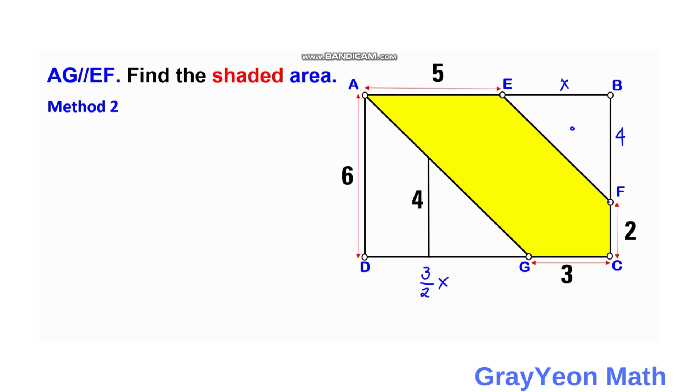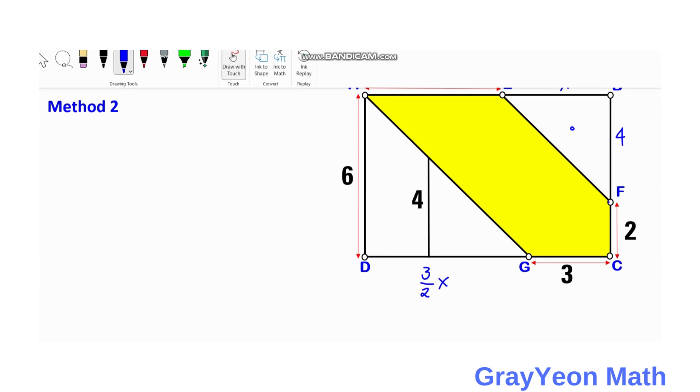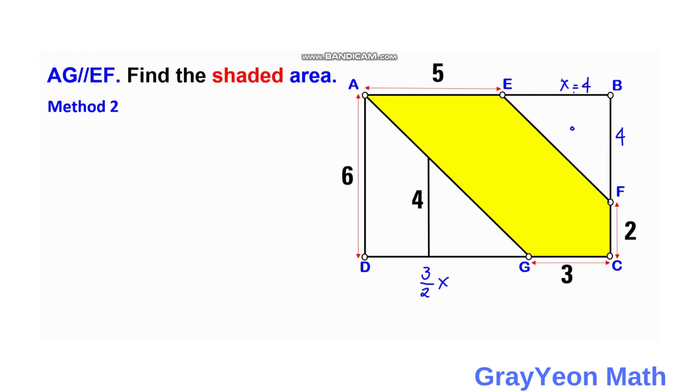So if X is 4, then this should be equal to 4. And this should be equal to 4 times 3 halves. So this becomes 2. So this becomes 6. This D, G is 6.